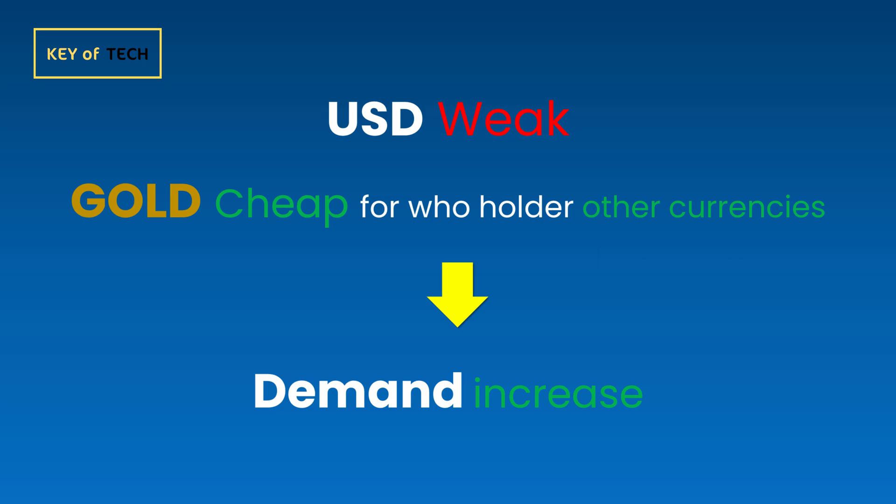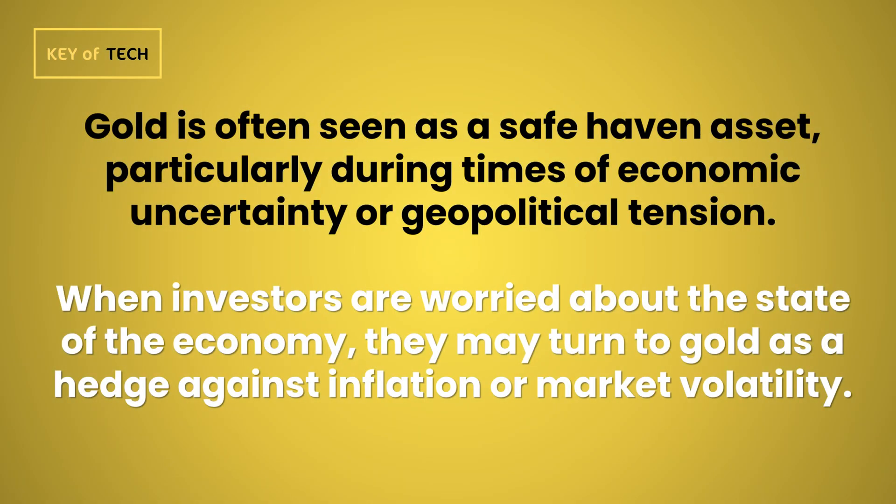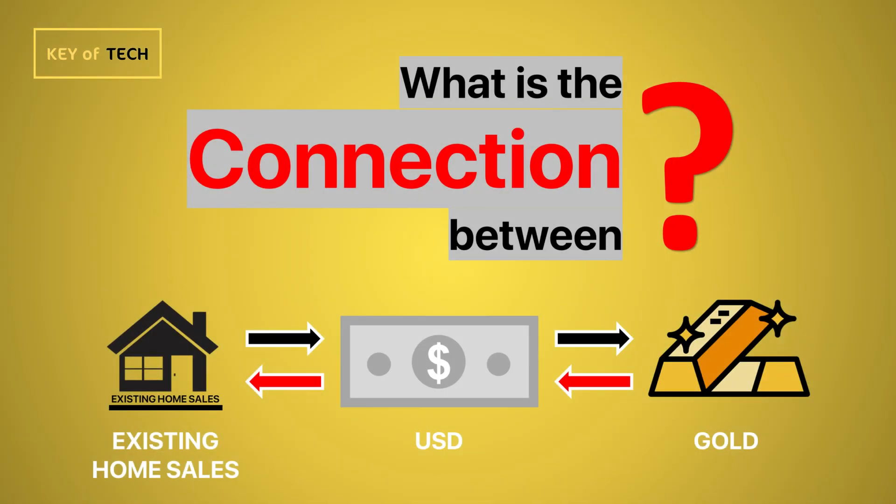Lastly, let's look at gold prices. Gold is often seen as a safe haven asset, particularly during times of economic uncertainty or geopolitical tension. When investors are worried about the state of the economy, they may turn to gold as a hedge against inflation or market volatility. So what is the connection between existing home sales, gold, and the USD?